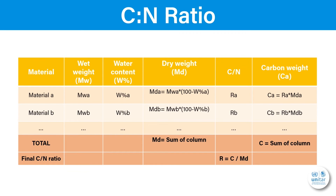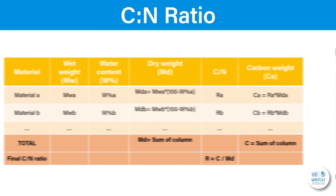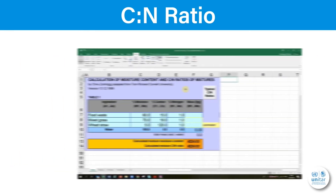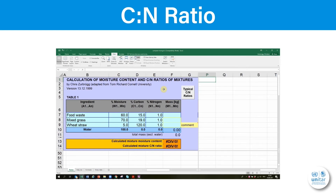Here is how you can work with these two parameters using an Excel file to conduct the calculations. In this Excel sheet we have entered the formulas explained before. In this case we have several waste materials with different moisture content and CN ratios.